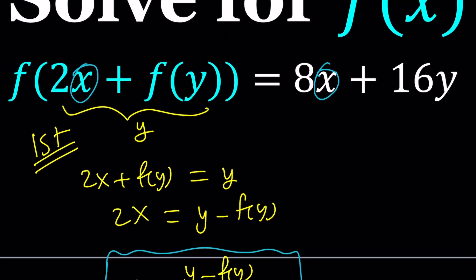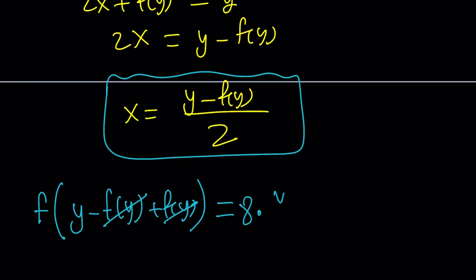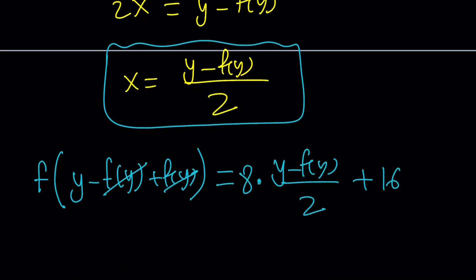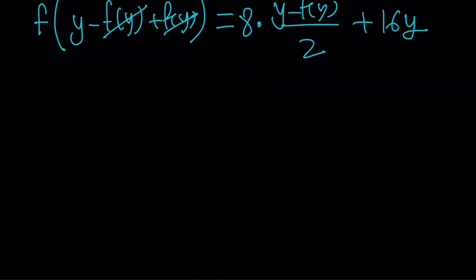Right-hand side is 8 times x, which is y minus f of y divided by 2, and I'm going to be adding 16y to the equation. Notice that we only have y as a variable because we replace all the x's with something in terms of y. So, now we have f of y equals 2 goes into 8 four times. I'm going to distribute the 4. That gives me 4y minus 4f of y plus 16y.